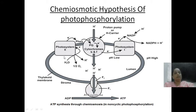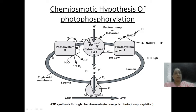This internal space is known as the lumen of the thylakoid. The photolysis of water is going to happen in the inner part of the membrane, and whatever oxygen is liberated will be released into the lumen of the thylakoid. So water is associated with the inner membrane.